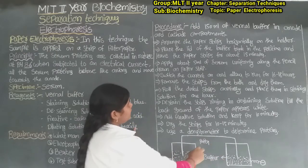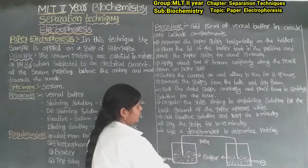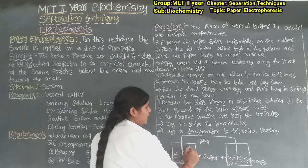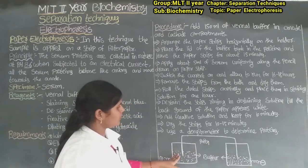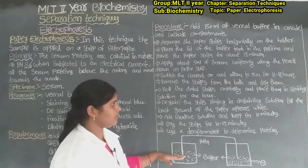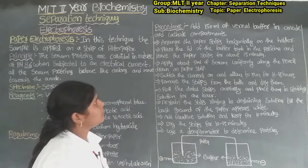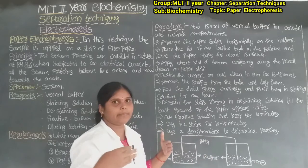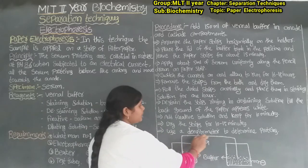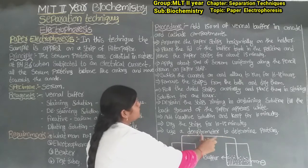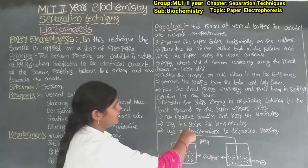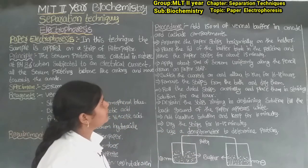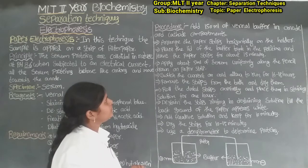The electrophoresis chamber has two compartments. We fill the veronal buffer into them. Then next, arrange the paper strip horizontally on the holder — the paper is held horizontally across. Then place the lid of the buffer tank in position and leave the paper strip for about 15 minutes to equilibrate.